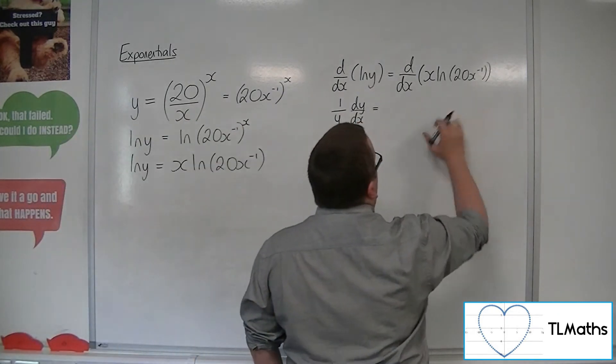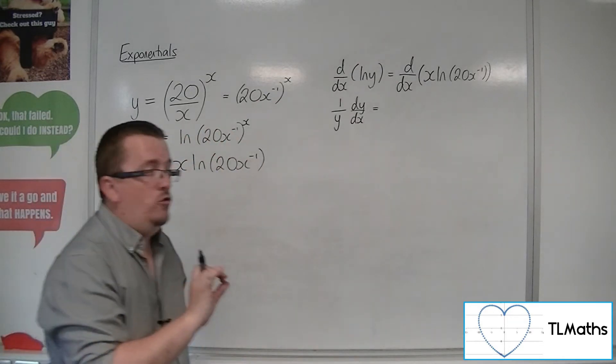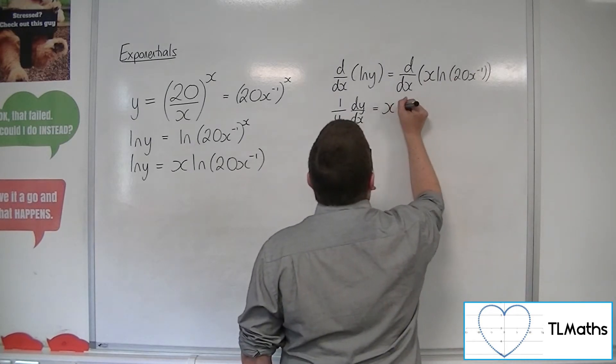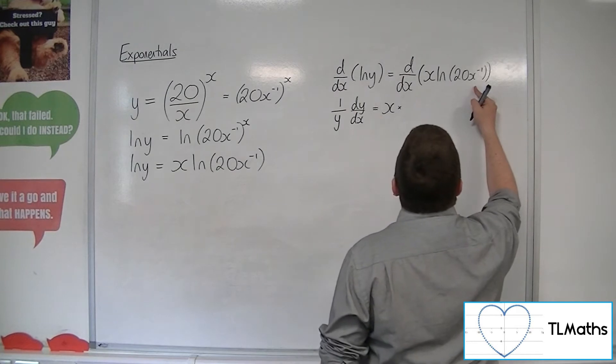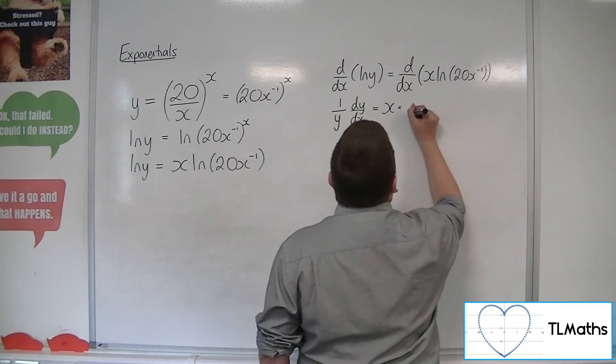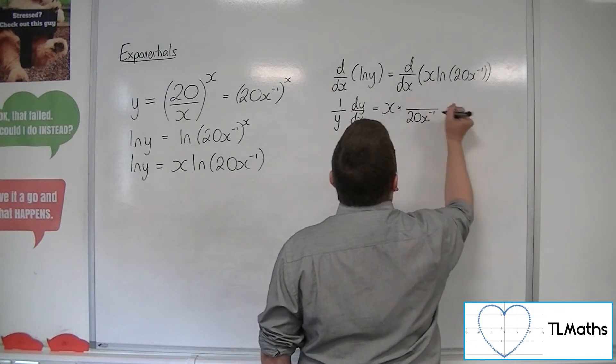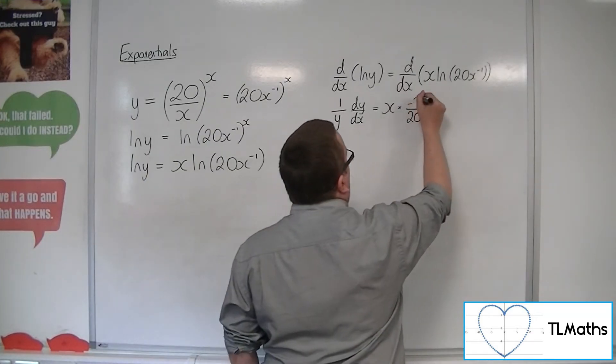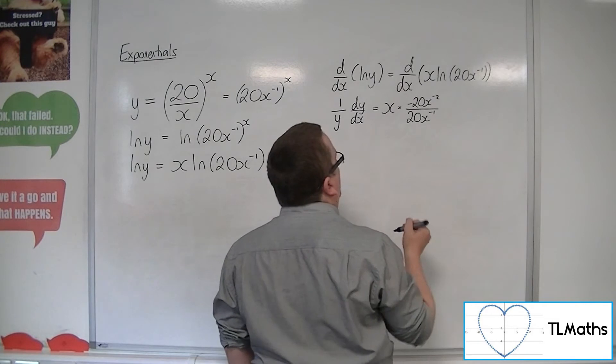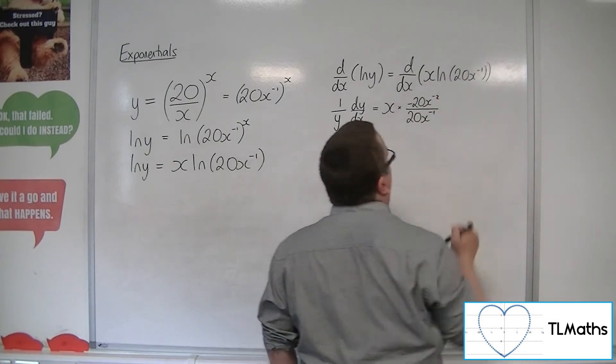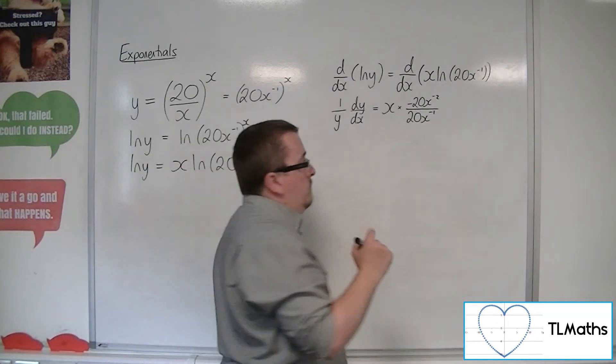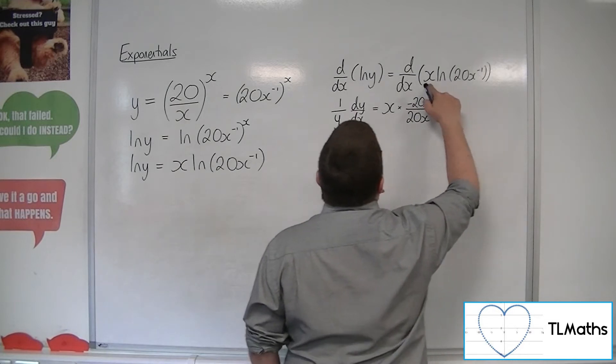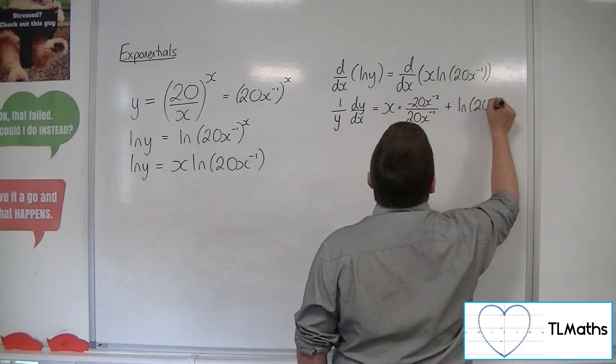Then to differentiate the right-hand side, we would have to use a combination of the product rule and chain rule. So product rule of the first times the derivative of the second. So we've got x times the derivative ln of 20x to the minus 1. So we would have 20x to the minus 1 in the denominator and the derivative of that in the numerator, which would be minus 20x to the minus 2. So this is the derivative of the ln of 20x to the minus 1. Product rule remember, so we've got plus ln 20x to the minus 1 times the derivative of x, which is just 1.